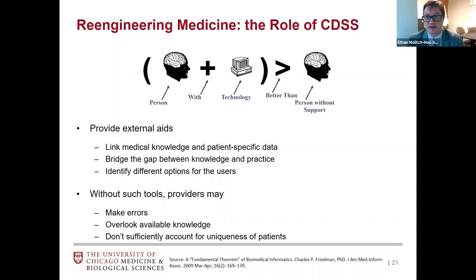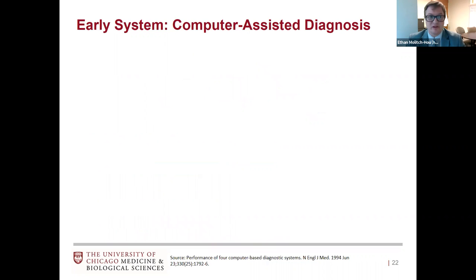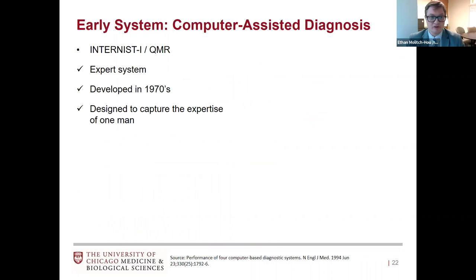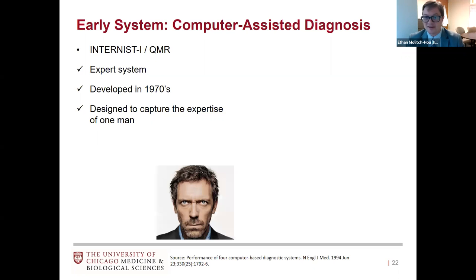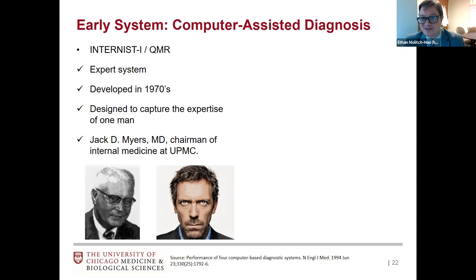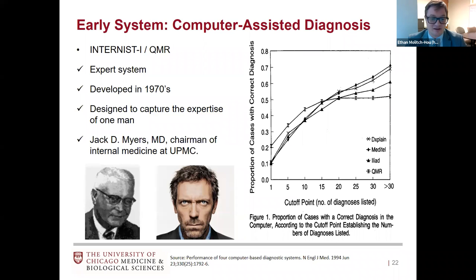Thinking of early systems for computer-assisted diagnosis: one of the first was Internist-I, now called QMR — an expert system to help with diagnosis by narrowing things down based on entered symptoms and data. It was designed to capture the expertise of just one man: Jack Myers, the chairman of internal medicine at University of Pittsburgh, whose knowledge base was captured into a computer program as part of an educational experiment. These devices were studied, and performance wasn't great back in 1994 — about 50 to 70% accuracy.